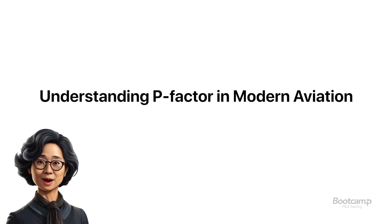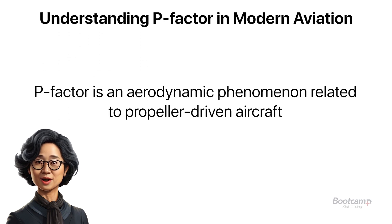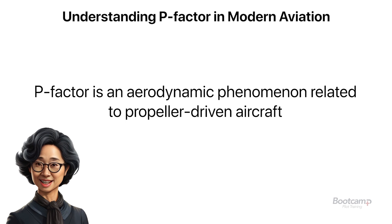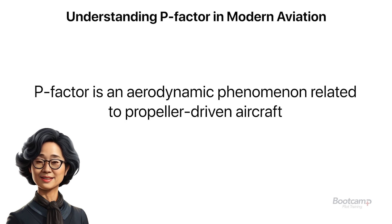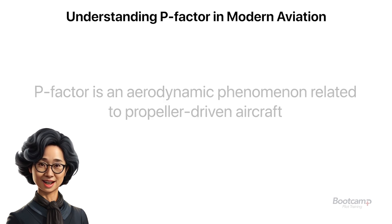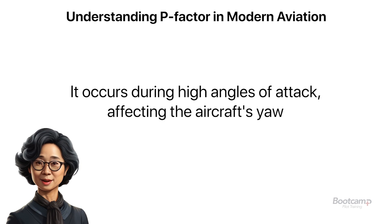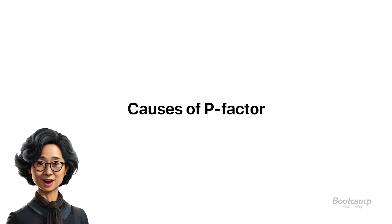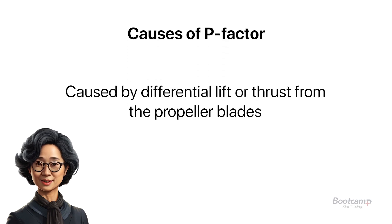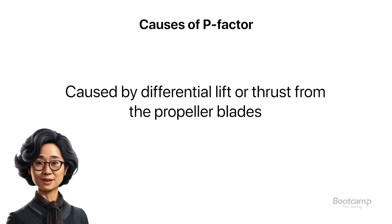In aviation, it is not uncommon to encounter a situation where your aircraft behaves unexpectedly during high angles of attack. This is often due to P-factor, an aerodynamic phenomenon associated with the asymmetric thrust generated by the airplane's propellers. P-factor occurs when there's a discrepancy in the lift or thrust produced by the propeller during flight, particularly noticeable at lower speeds and higher altitudes. This is caused by the tilt of the propeller and the airflow it produces.